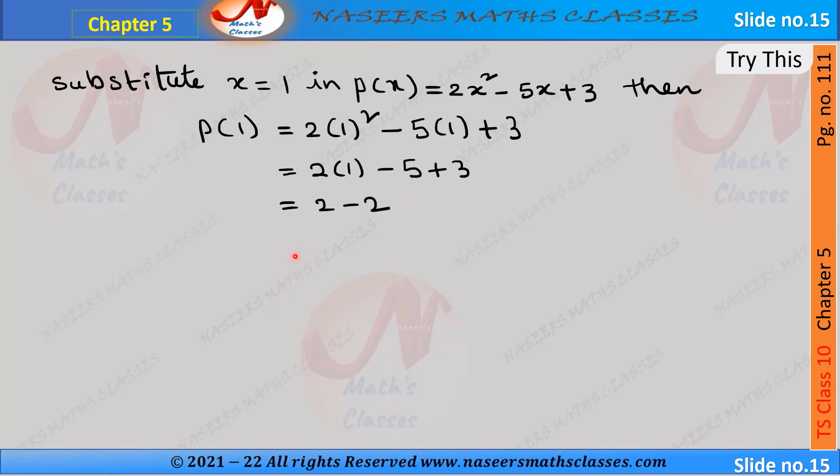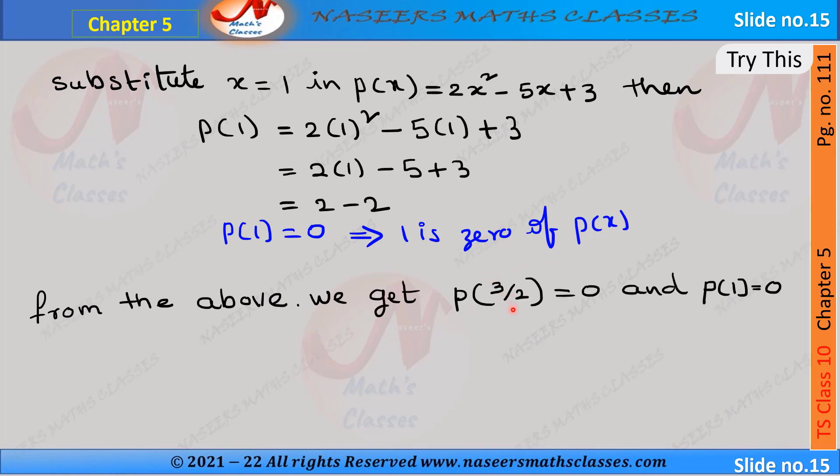So here 2 - 2 is 0, so we can write p(1) = 0. Therefore we can say 1 is zero of p(x).